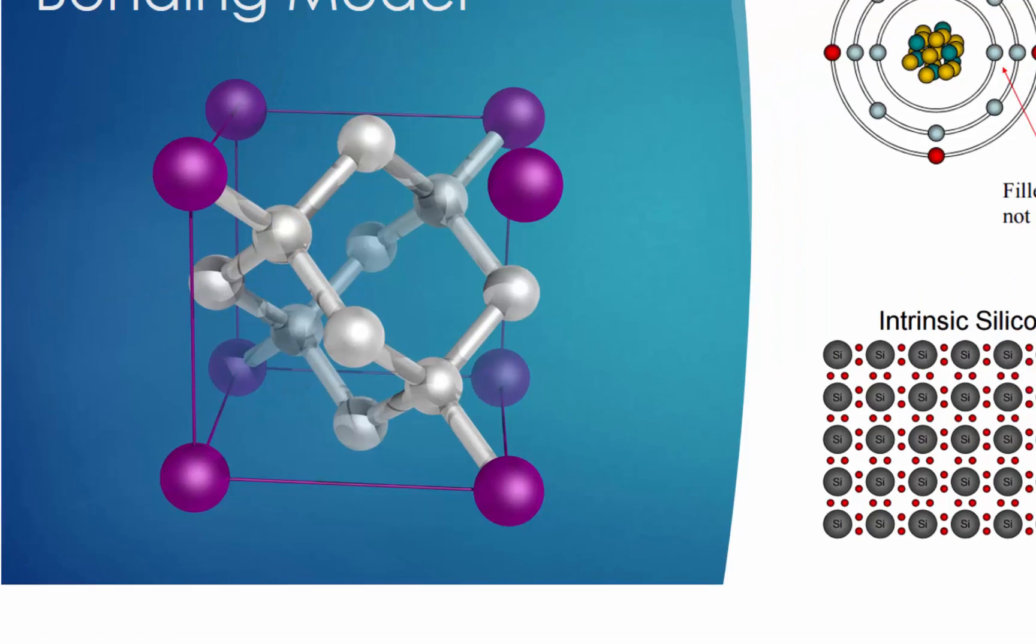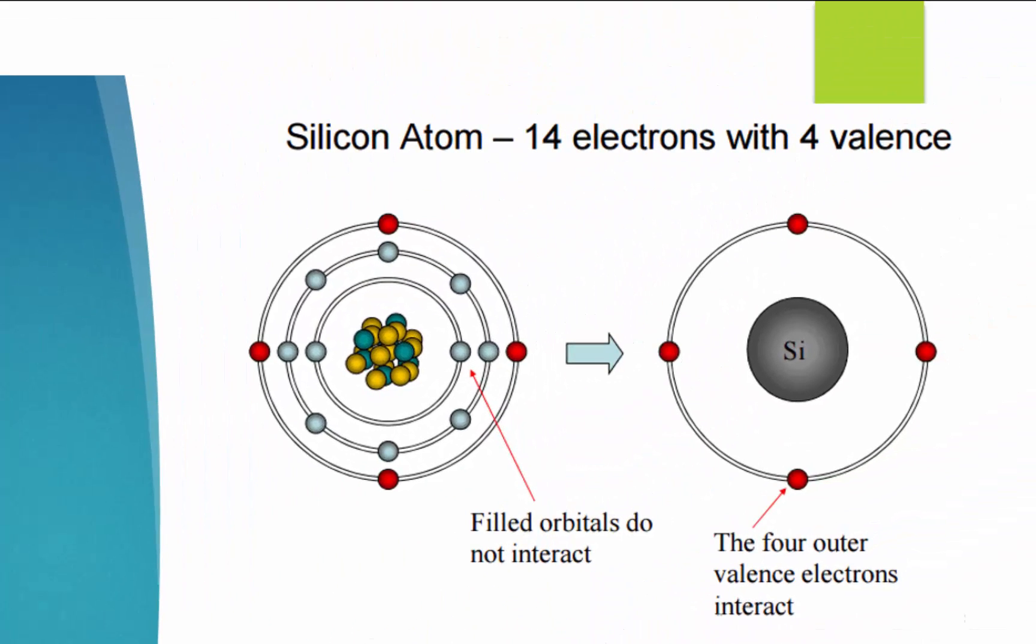As we have introduced in the last video, each isolated silicon atom has 14 electrons in total.